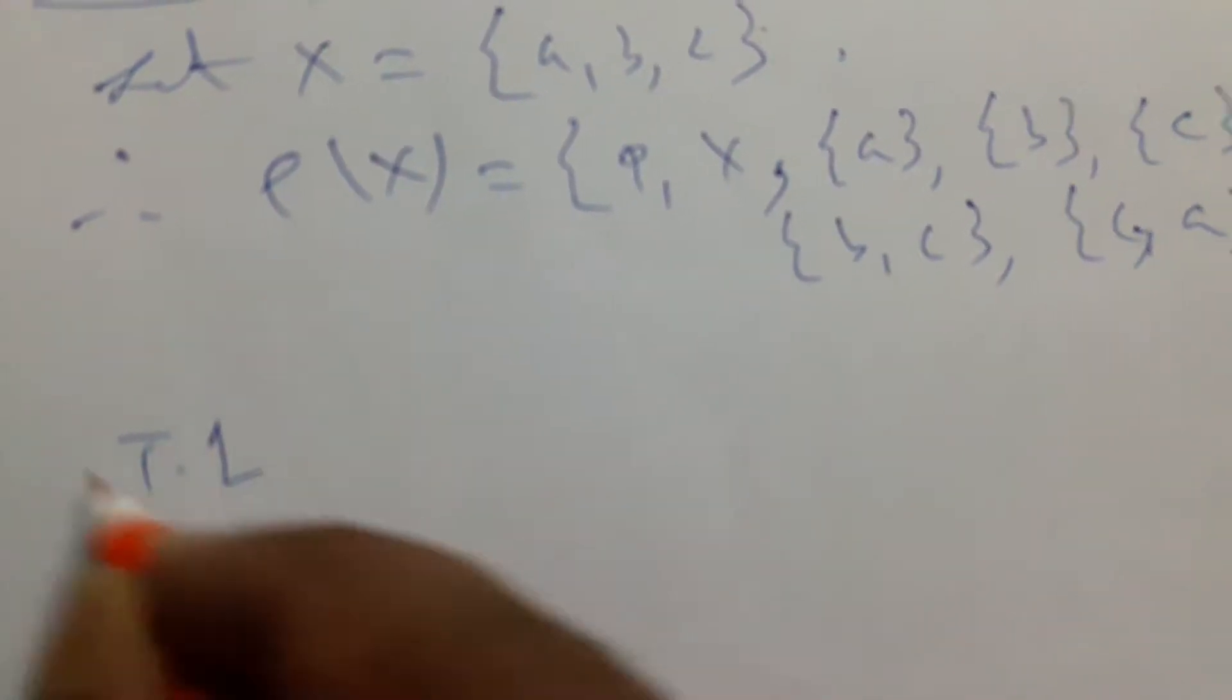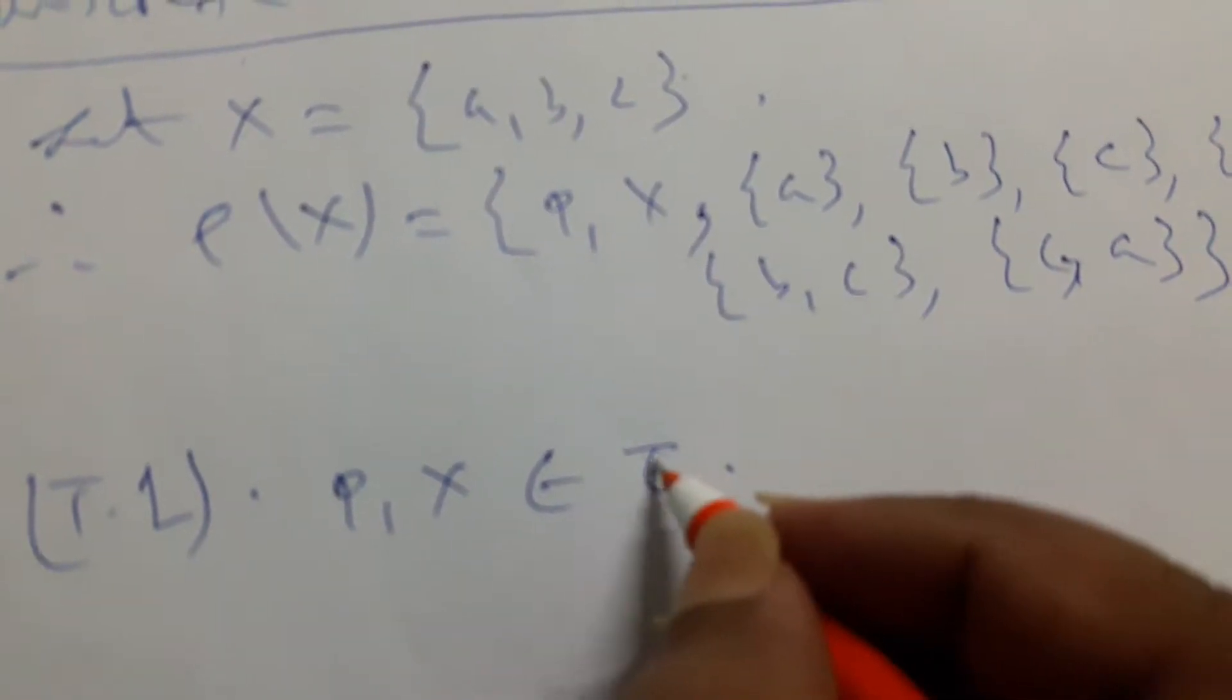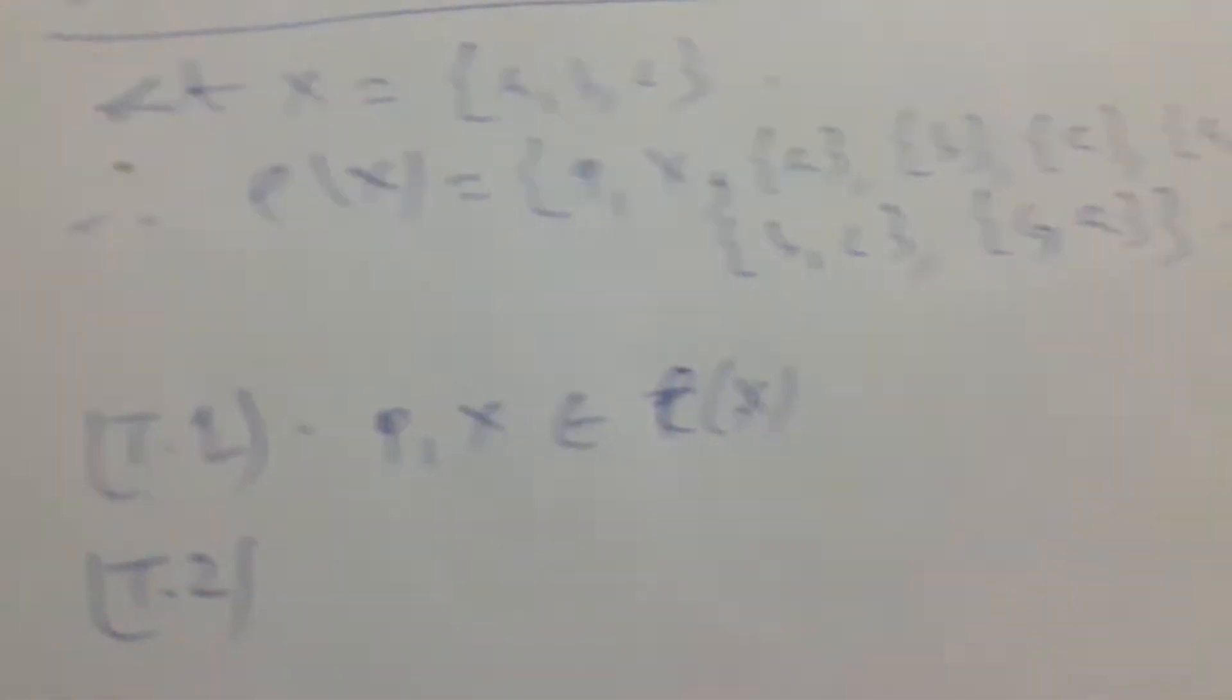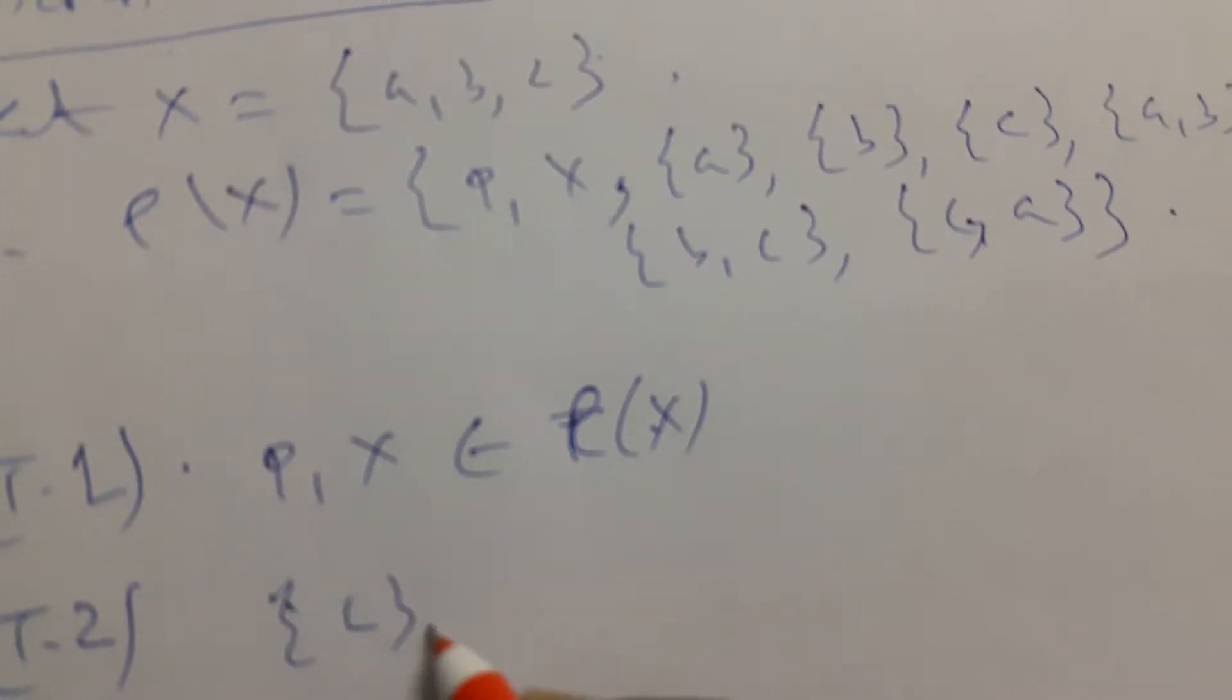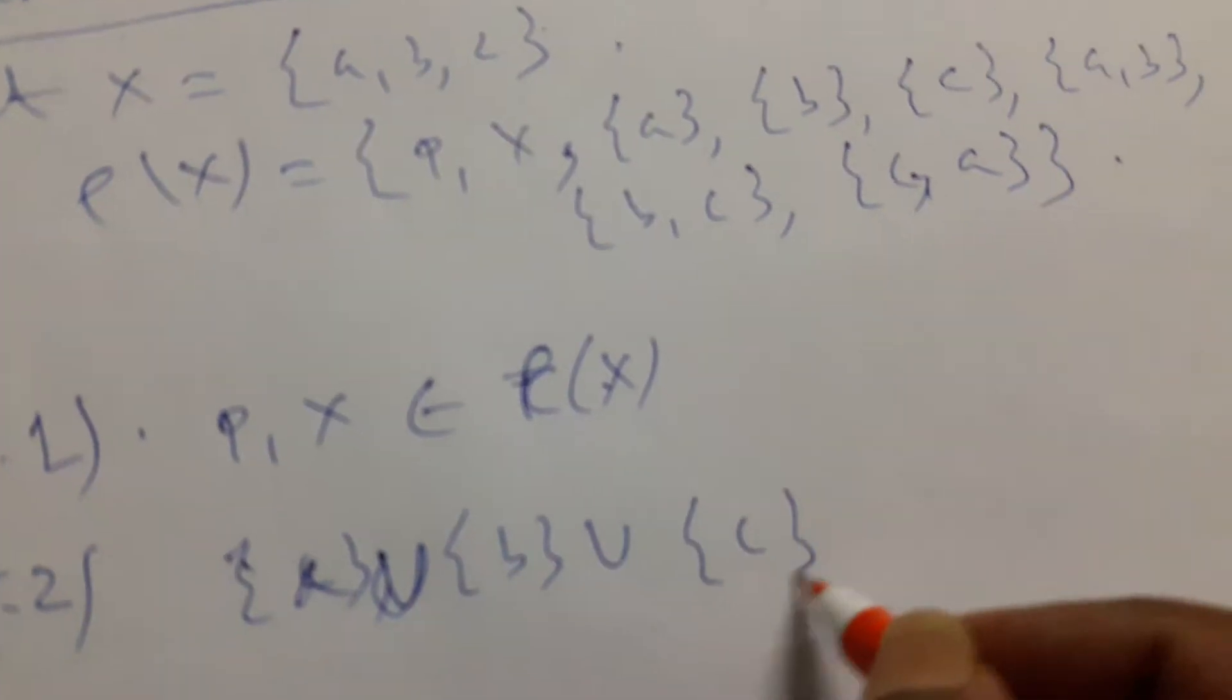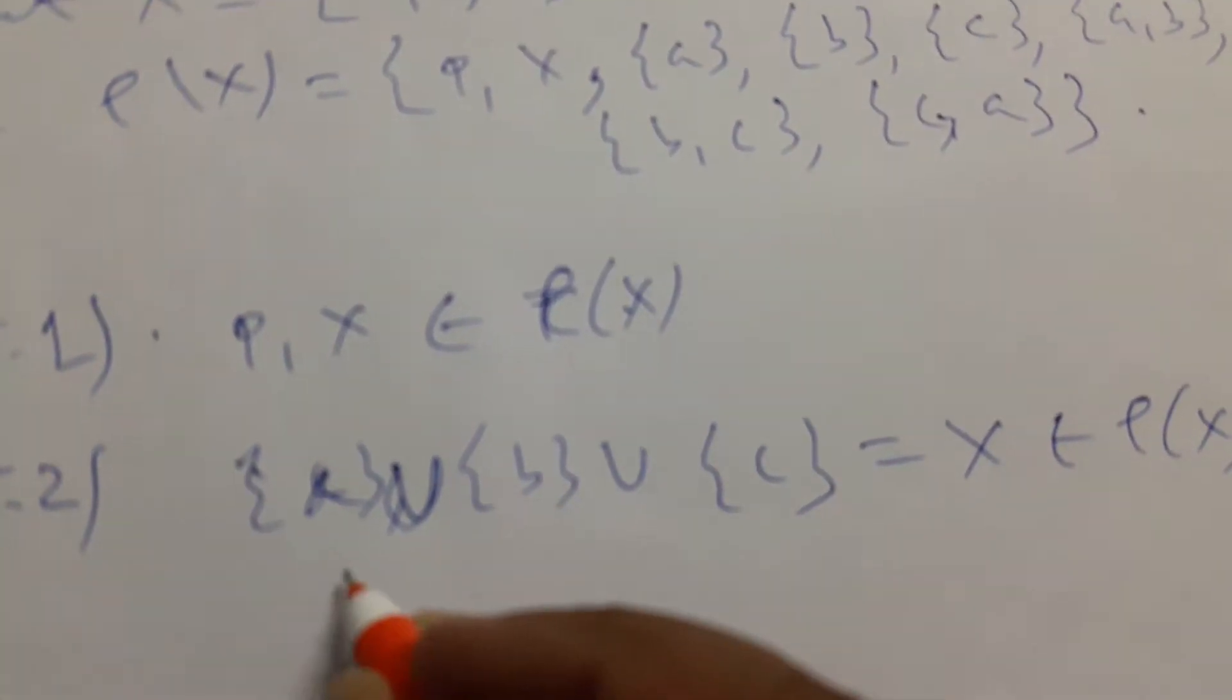Now for testing the topological property: φ and X belongs to ρ(X). For the T2 property, union of any members of ρ, like {a,b} ∪ {b} ∪ {c} equals X. Three members belong to ρ(X), for {a,b,c} belongs to ρ(X).